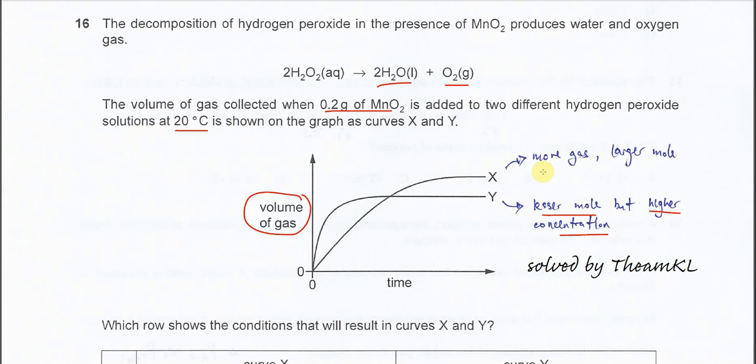Therefore X has more moles of H2O2 because it produces more gas, but the rate is not as fast as Y, meaning the concentration is actually less.